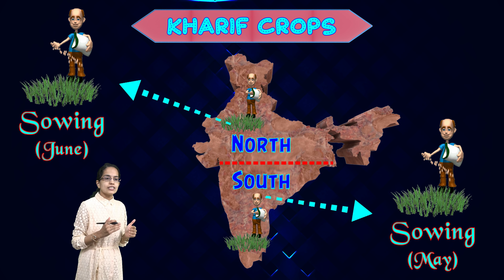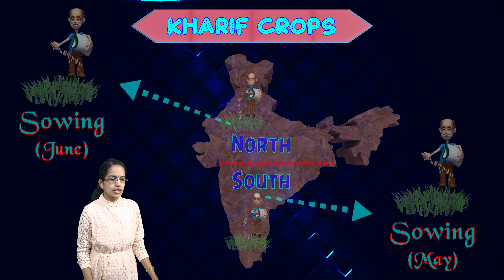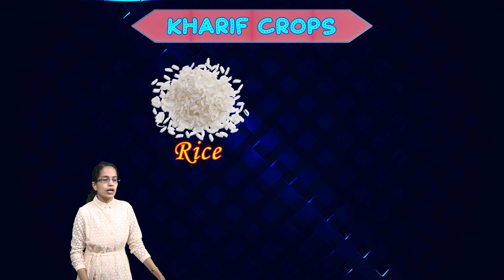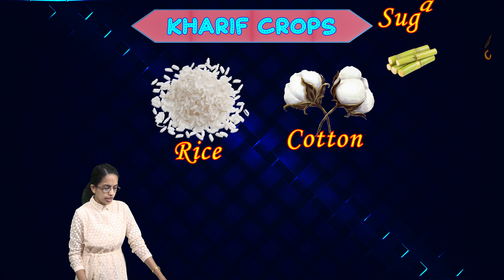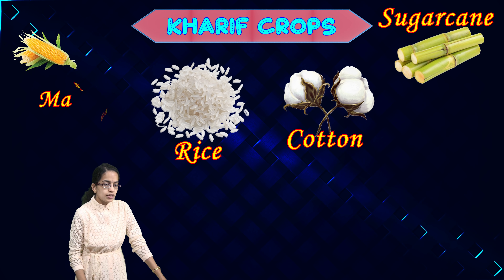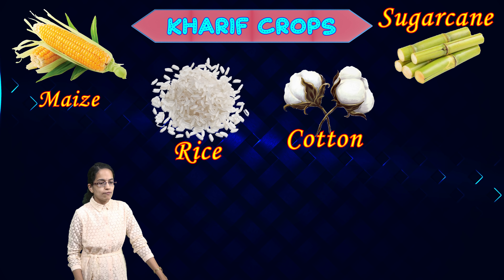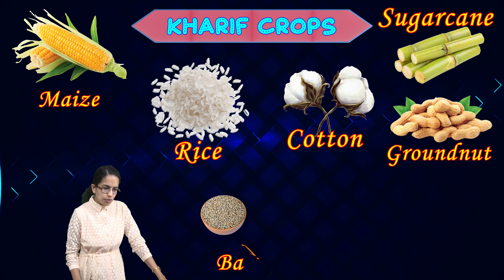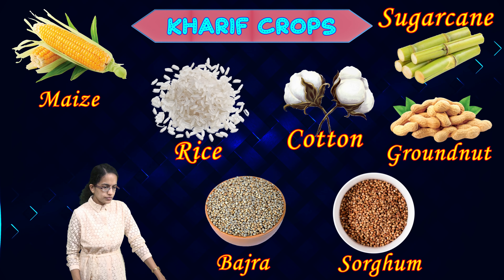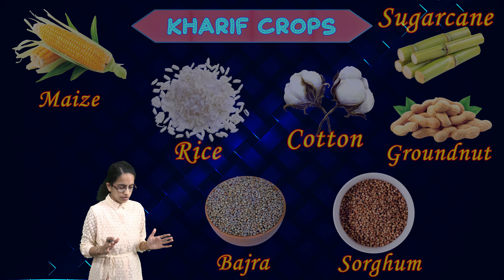The important crops associated with Kharif are rice, which indeed requires a lot of water, cotton, sugar cane, maize, and groundnut — crops that you enjoy during the monsoon season. Besides that, bajra and sorghum are also crops obtained during the Kharif season.